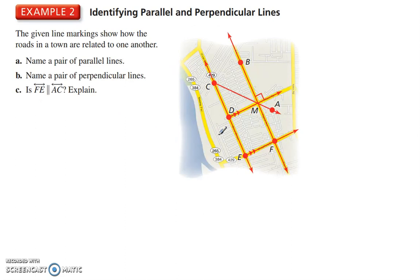Identifying parallel and perpendicular lines. The given line markings show how roads in a town are related to one another. Name a pair of parallel lines. All right. Well, we've got CD, for example, or CE, and BF. We've got line CD and BF. Those two are parallel.